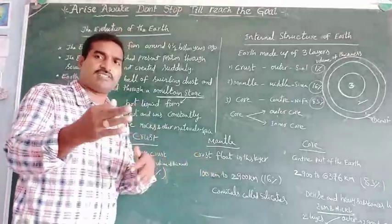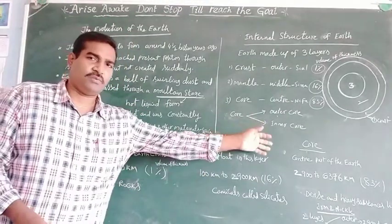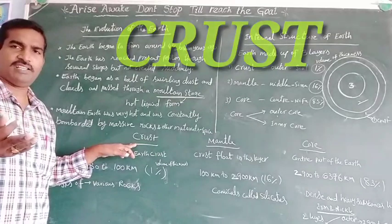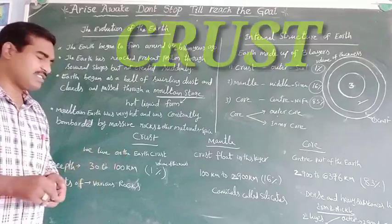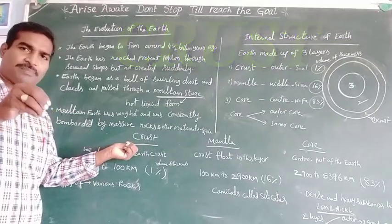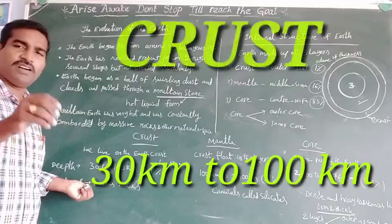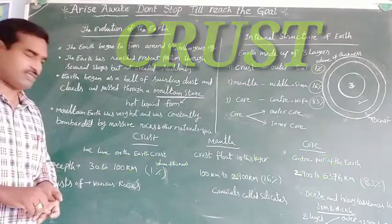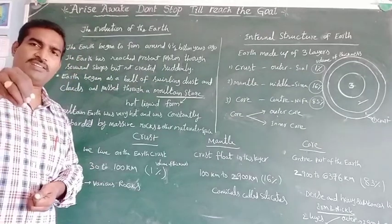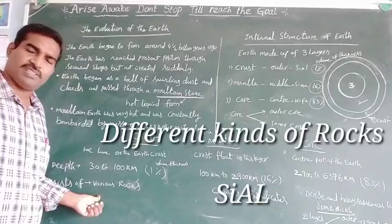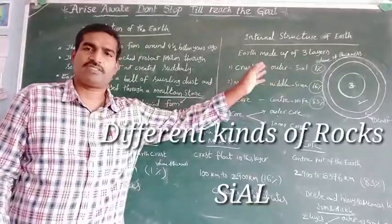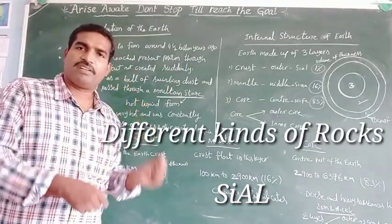Now we will discuss in detail about the earth crust, mantle, and core. First, the earth crust — we live on the earth crust only. What is the depth of the earth crust? From 30 to 100 kilometers. These are the details about the earth crust. What are the substances there? Mostly different kinds of rocks are there. SIAL is there — silicon and aluminum — mostly found in the earth crust.